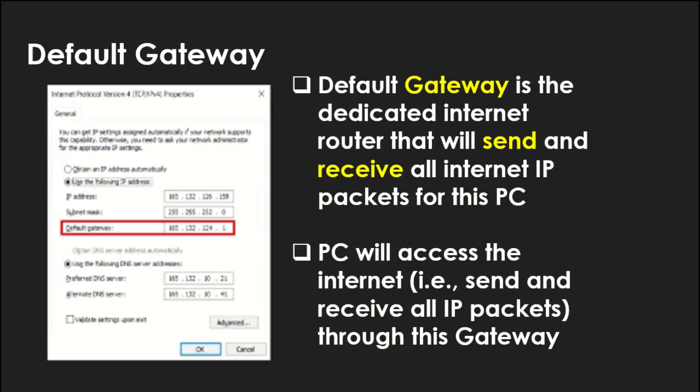Next, we're going to look at the default gateway. The default gateway address is listed there. The default gateway is the dedicated internet router that will send and receive all internet packets for this PC. Knowing your PC's setup and how your default gateway is set up essentially explains your entire connection to the internet — that's why it makes you very powerful when it comes to your TCP/IP knowledge. The PC will access the internet through this gateway, and all packets sent and received will go through it. That is why it's called the default gateway — and by definition, all gateways are IP routers, so you'll see the words router and gateway used interchangeably.